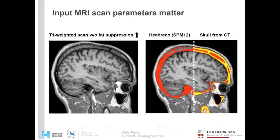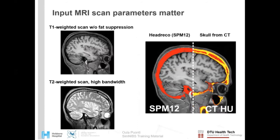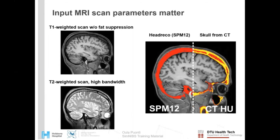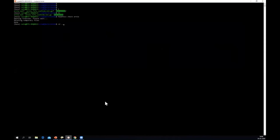The most robust way to mitigate these issues is to include a T2-weighted scan. The examples shown are worst-case scenarios — T1-only scans often work fine. But the combination of T1 and T2-weighted scans typically yields the most accurate segmentations, matching CT-based skull reconstructions quite closely.